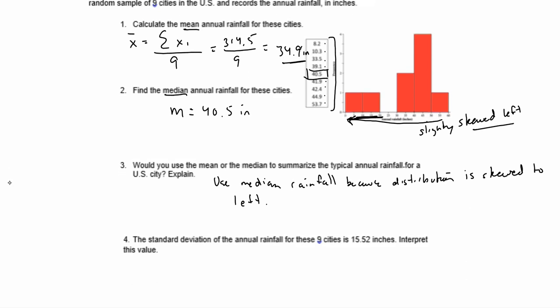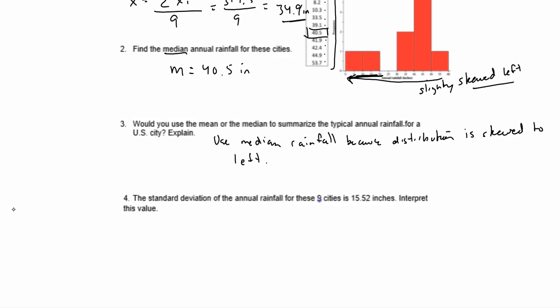Now, one thing in our other example we did not talk about is variability. In this case, we need standard deviation. We probably wouldn't use standard deviation normally; we'd use IQR, but we don't know what that is right now. We're going to learn that in the next section. But right here, the standard deviation of the annual rainfall for the nine cities is 15.52 inches. Interpret this value.